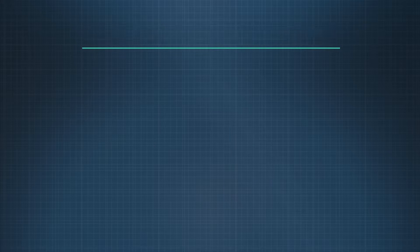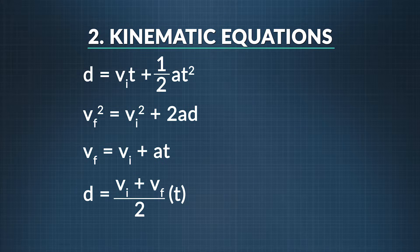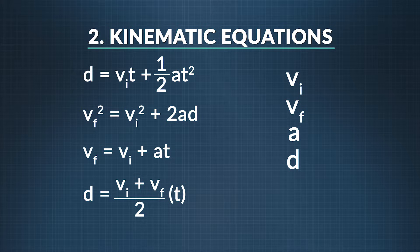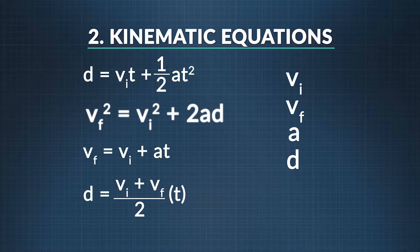The next step is to find one of the four kinematic equations that has the three variables we know and has our unknown variable, all within the same equation. We should use equation number two: final velocity squared equals initial velocity squared plus two times our acceleration times displacement.